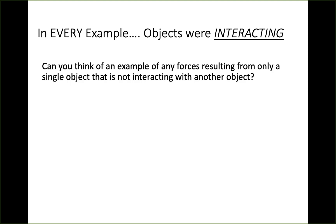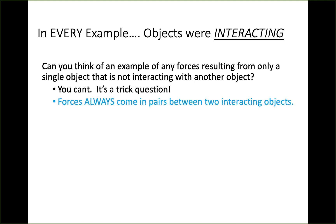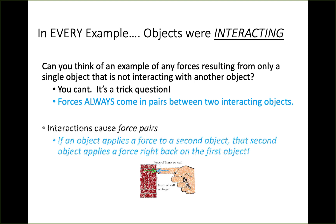All of the interactions in those examples happened simultaneously — both objects touched each other at the same time. Can you think of any example of forces resulting from only a single object not interacting with any other object? The answer is you can't, because it's a trick question. Forces always come in pairs between two interacting objects.